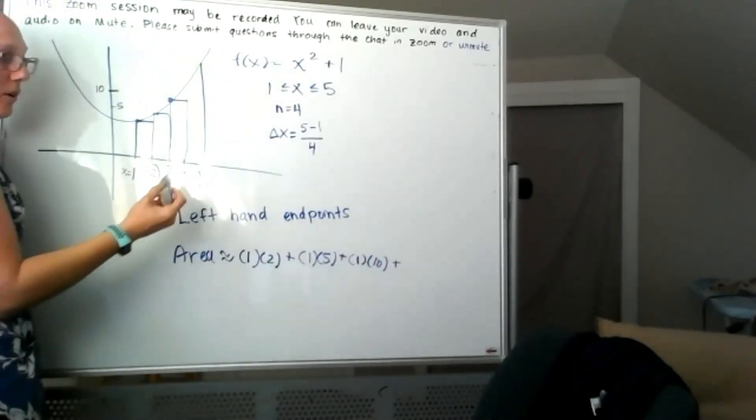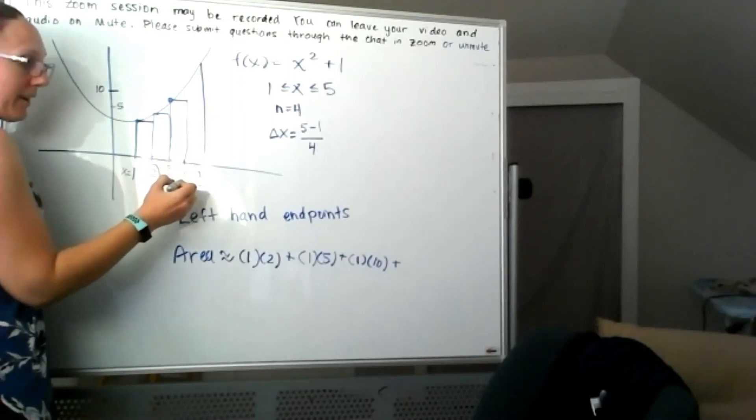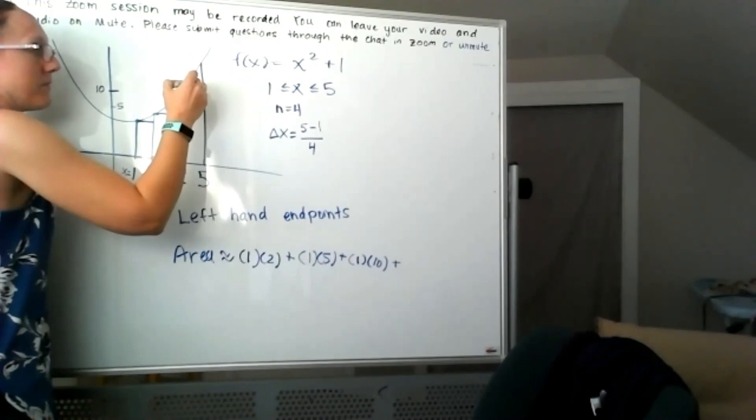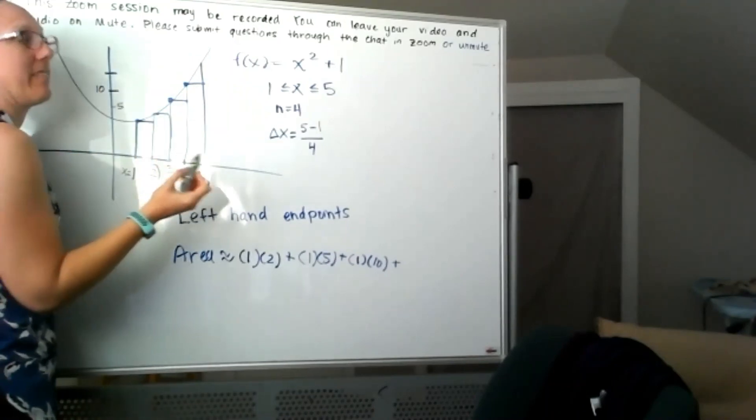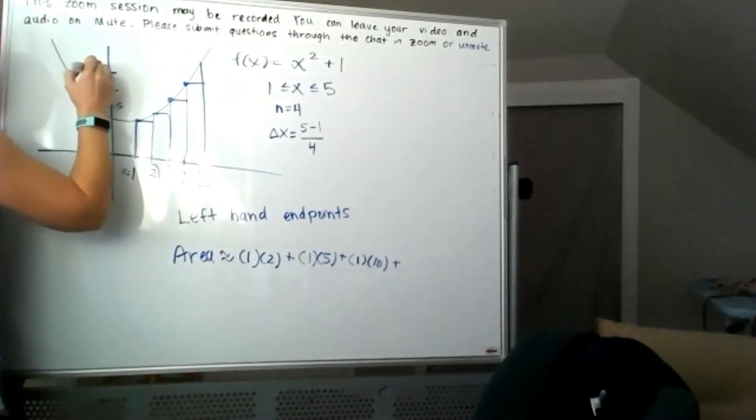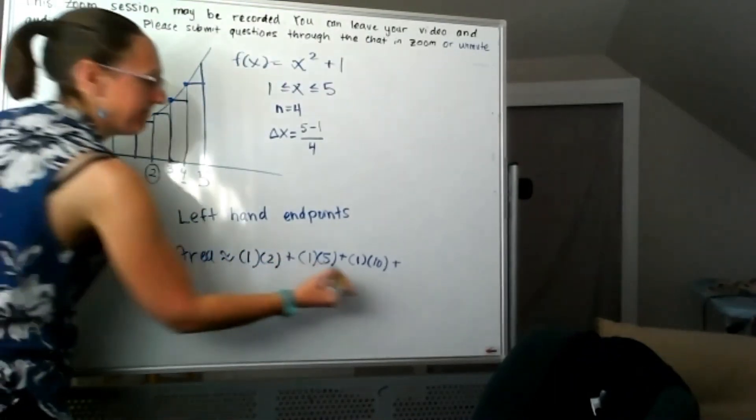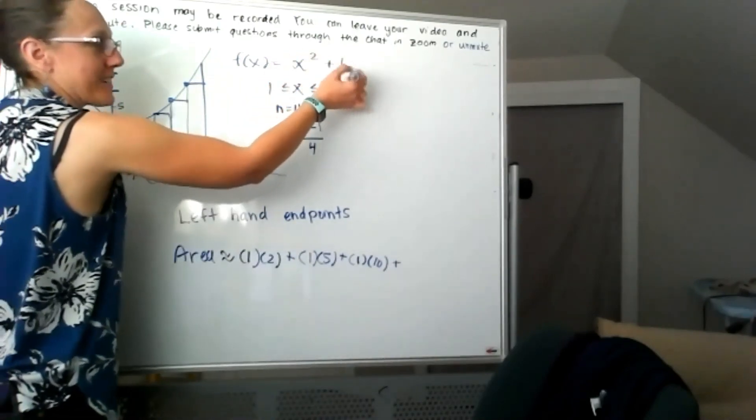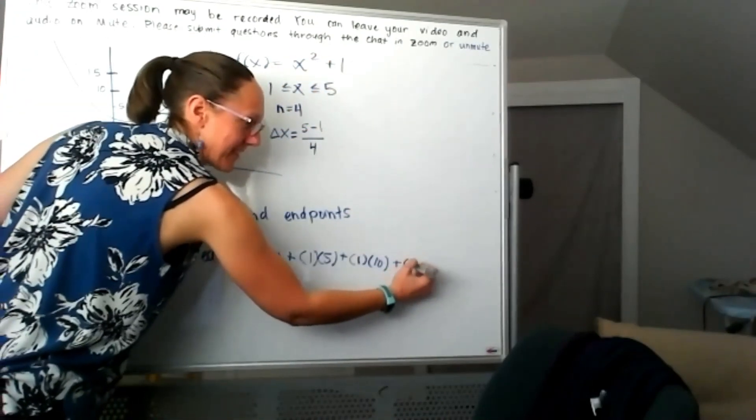And then for our fourth rectangle, I'm going to be plugging in that x value of 4 into the function to figure out what that height there should be. So 4 squared plus 1 - oh wait, 4 squared is 16, isn't it? I lied. 16 plus 1, I'll be at 17.